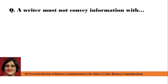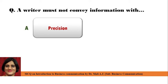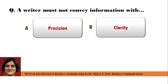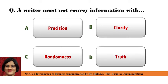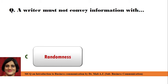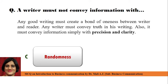Next question: A writer must not convey information with — Point A: Precision, Point B: Clarity, Point C: Randomness, and Point D: True. Correct answer is Point C: Randomness. A writer must not convey information with Randomness. Because any good writing must create a bond or oneness between Writer and Reader. Any writer must convey Truth in his writing. Also, it must convey information simply with Precision and Clarity.